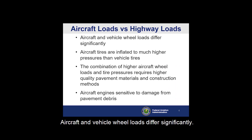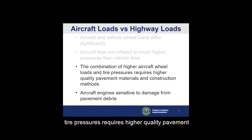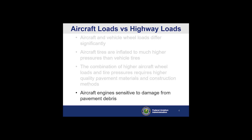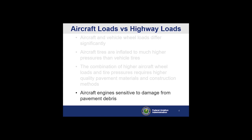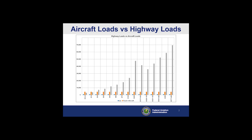Aircraft and vehicle wheel loads differ significantly. Aircraft tires are inflated to much higher pressures than vehicle tires. The combination of higher aircraft wheel loads and tire pressures requires higher quality pavement materials and construction methods, and aircraft engines are sensitive to damage from pavement debris. This slide graphically displays the differences between tractor-trailer truck tire loads and aircraft tire loads for various aircraft, with truck tire loads represented by the orange columns and aircraft tire loads by the gray columns.